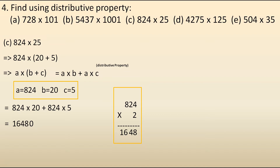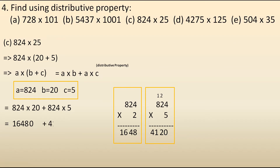Now let's multiply 824 into 5: 5 fours are 20, carry 2; 5 twos are 10 plus 2 is 12, carry 1; 5 eights are 40 plus 1 is 41. So 824 into 5 is 4,120. Now let's add 16,480 and 4,120: 0 plus 0 is 0; 8 plus 2 is 10, carry 1; 4 plus 1 plus carried 1 is 6; 6 plus 4 is 10, carry 1; 1 plus 1 is 2. So the final answer is 20,600.